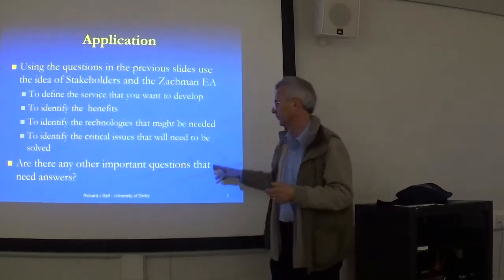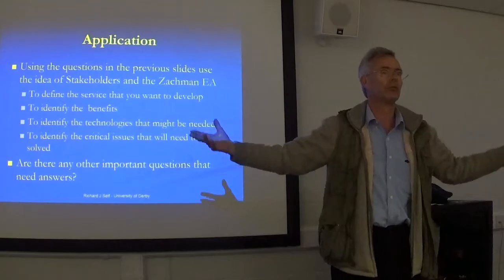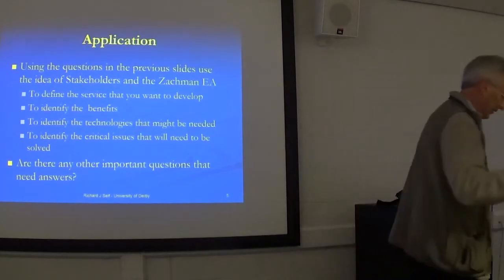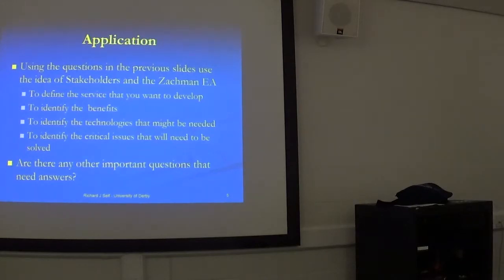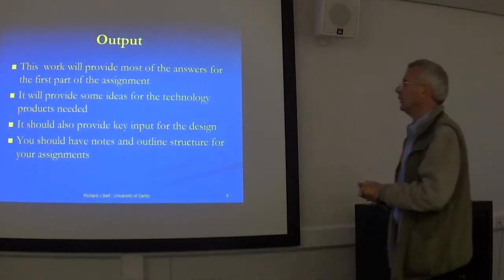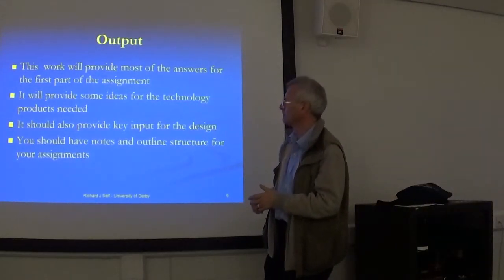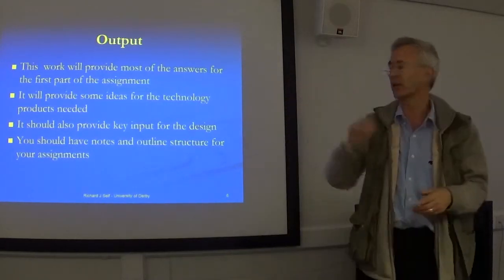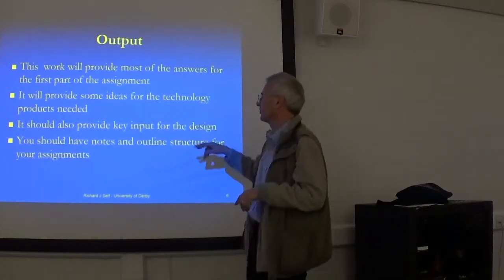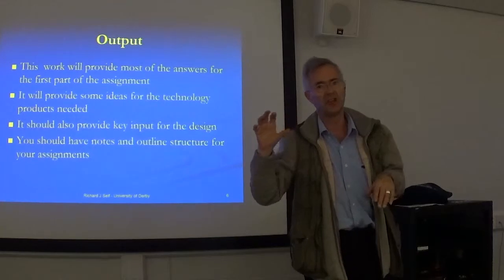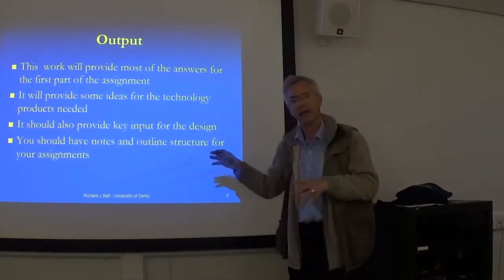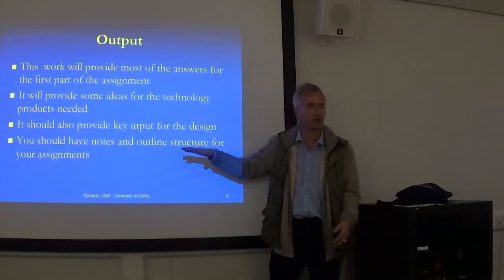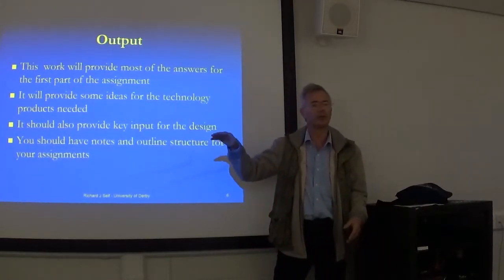So think about what needs to be solved, what are the other important issues — they come from a random range that you've got to think about. That creativity and inquisitiveness is necessary to become effective. All of that stuff helps you answer the first part of the assignment. Thinking through those questions will help you identify some of the technology you might need to solve this kind of issue. It then leads through to the second stage, which is the key input for your design using the Zachman Enterprise Architecture. This should guide you as you develop the structure and content of your assignment.